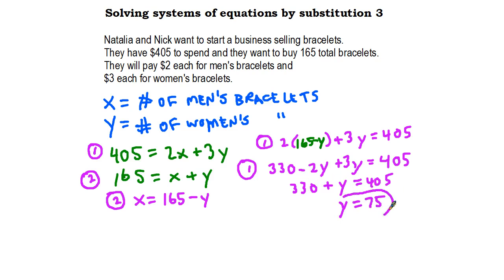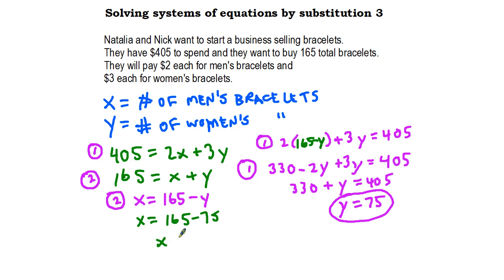I'm going to go ahead and circle that answer. Then we'll plug y = 75 back into the equation x = 165 − y. So x = 165 − 75, which gives us x = 90.